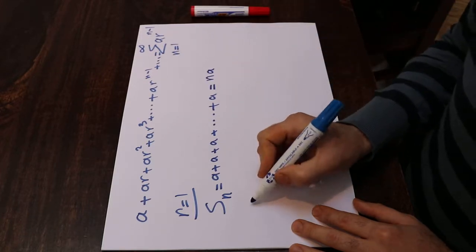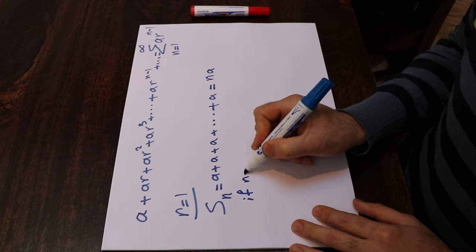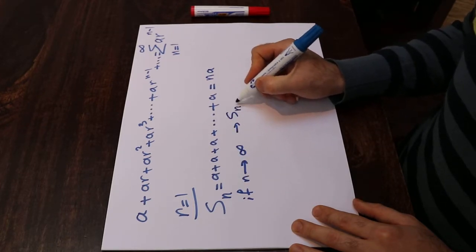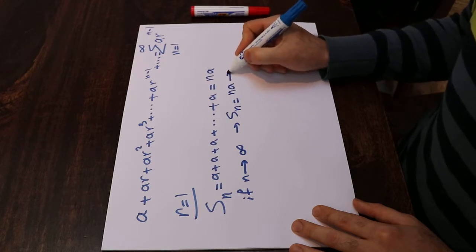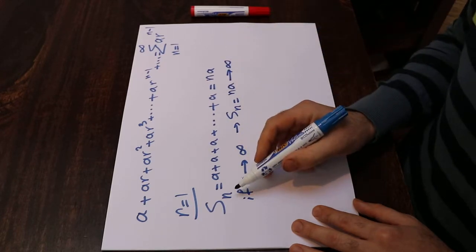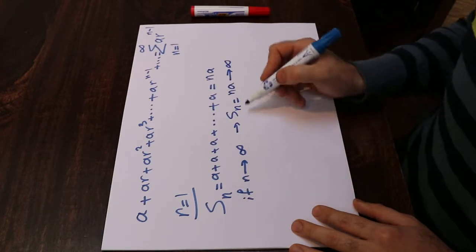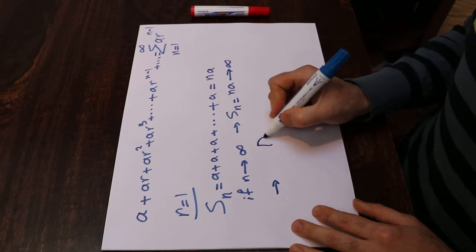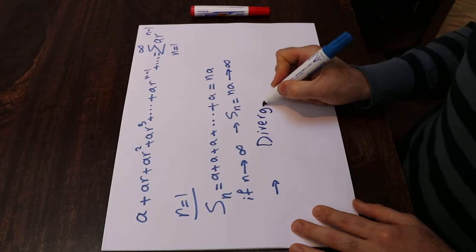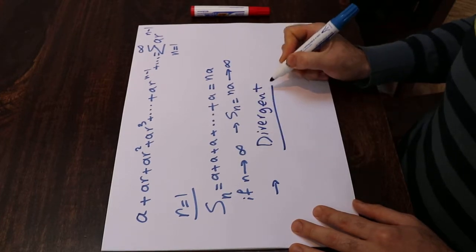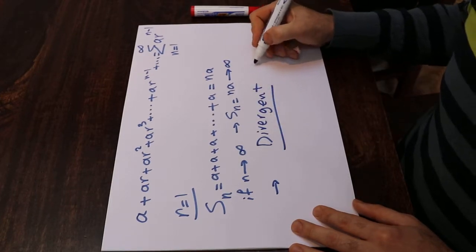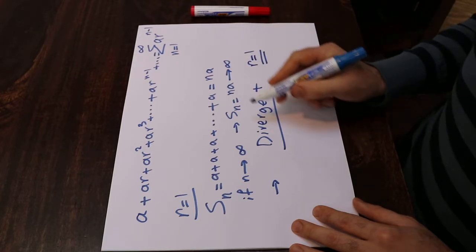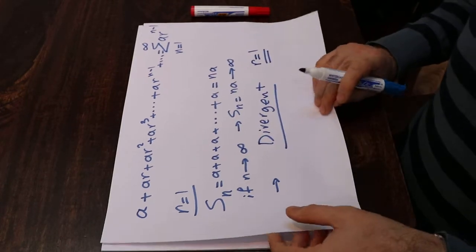And if N tends to infinity, therefore SN, which is equal to NA, will tend to infinity. That means the limit of SN does not exist, and from here you can conclude that the series is divergent. Therefore, when R is equal to 1, the geometric series is always divergent.